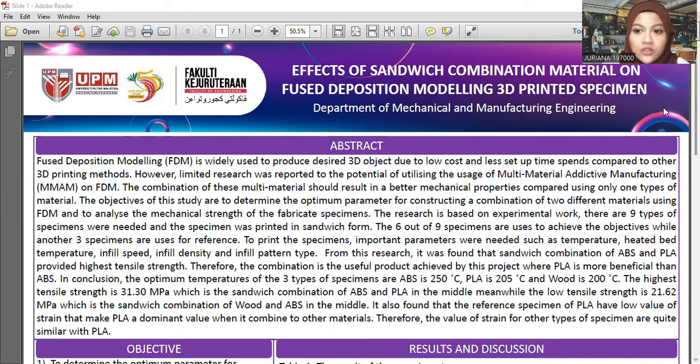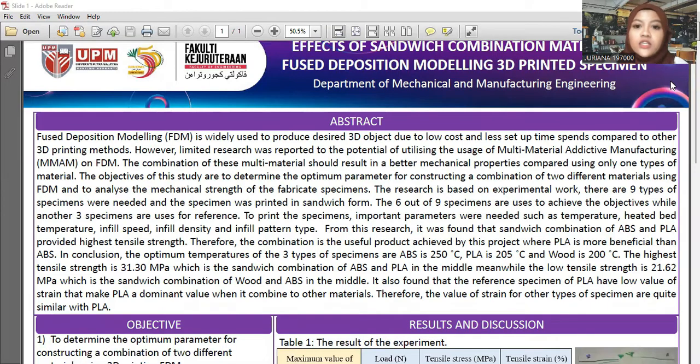Here is the abstract, which includes all elements from my thesis. FDM is widely used to produce 3D printed objects due to low cost and less setup time compared to other 3D printing methods. However, limited research has explored the potential of multi-material additive manufacturing using FDM. The combination of multiple materials should result in better mechanical properties compared to using only one type of material.